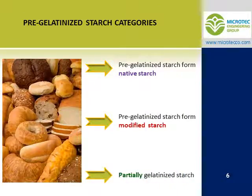We have three different categories of pre-gelatinized starch. The first group is created just from gelatinization of native starch without any additives. The second group is pre-gelatinized modified starch — many people also call this pre-gelatinized starch. For making this kind, first some processes and adding some chemicals are required to modify the native starch, then the created modified starch is gelatinized. The last group is partially gelatinized starch.